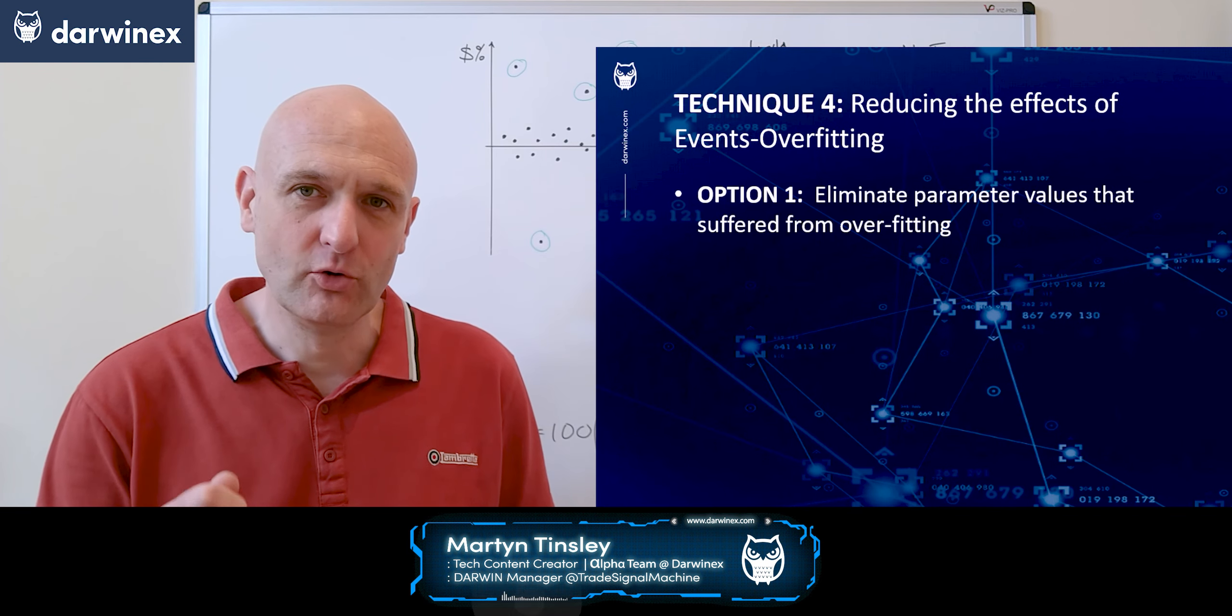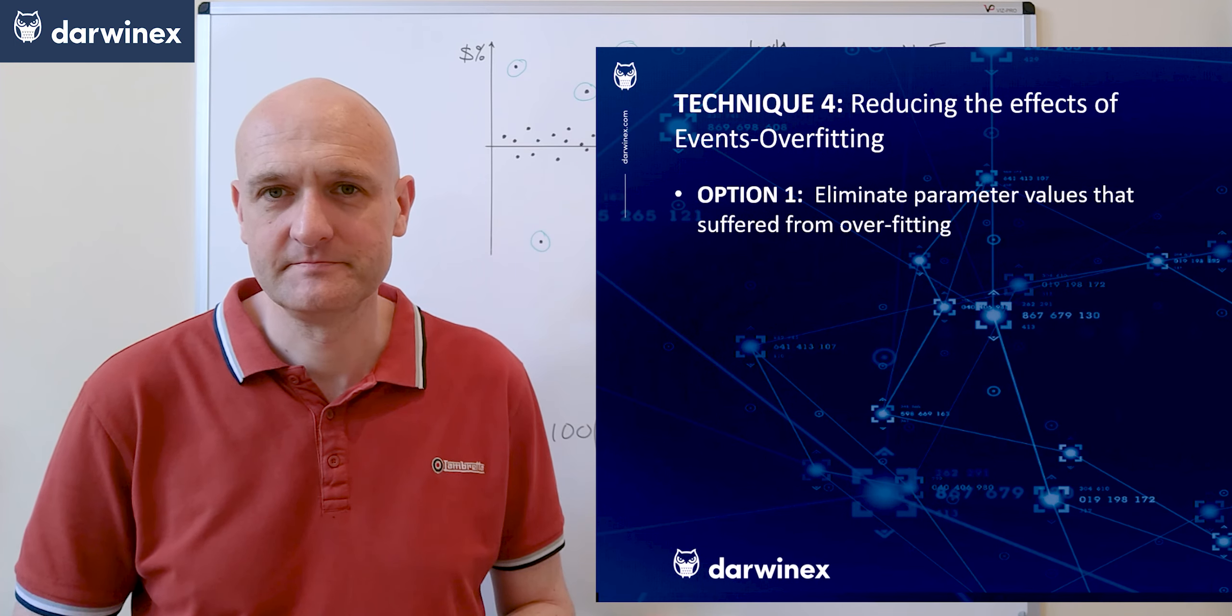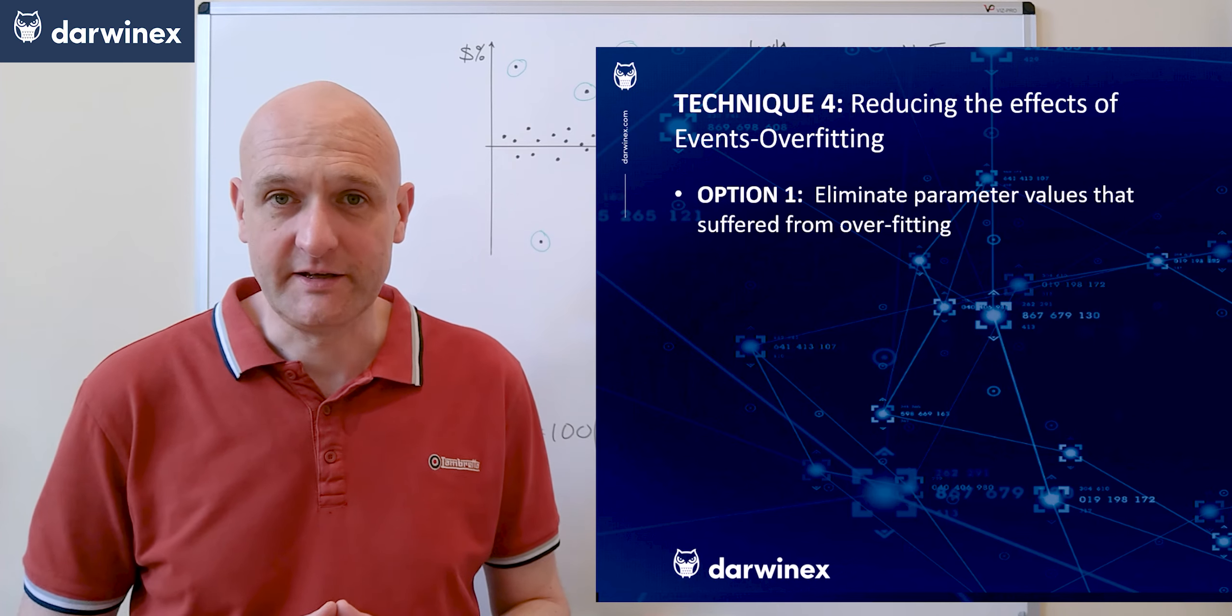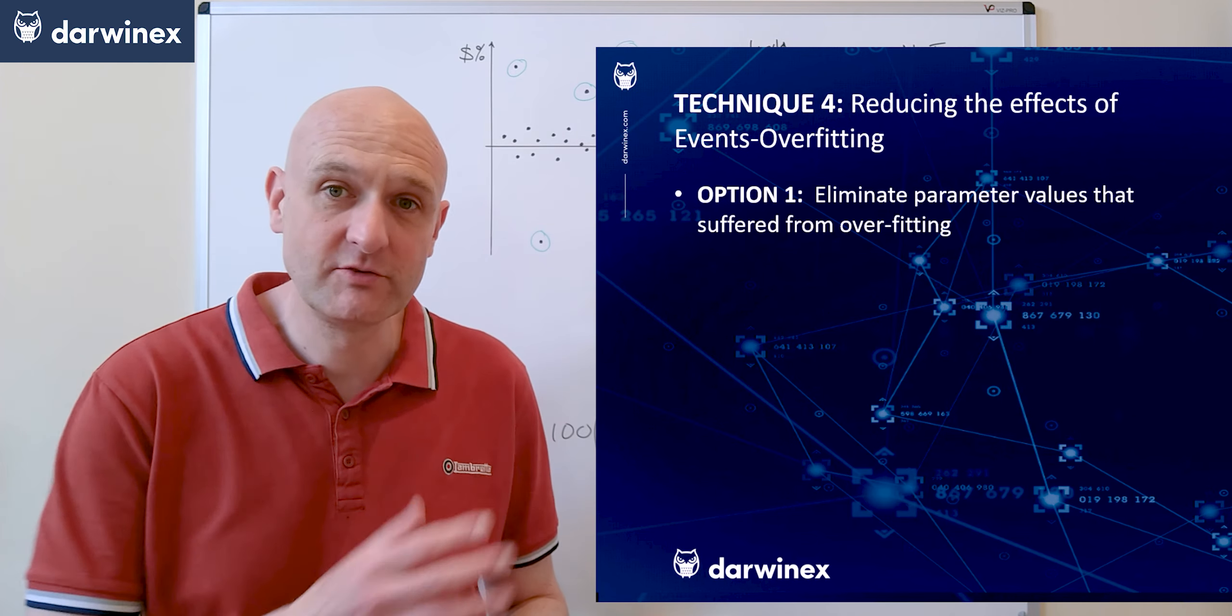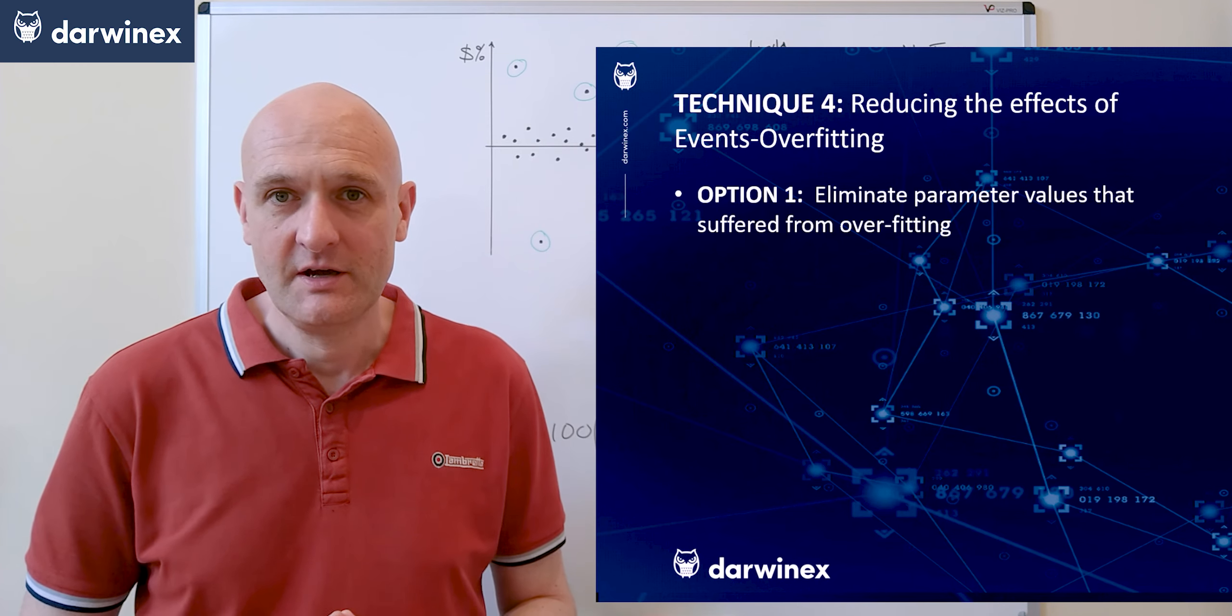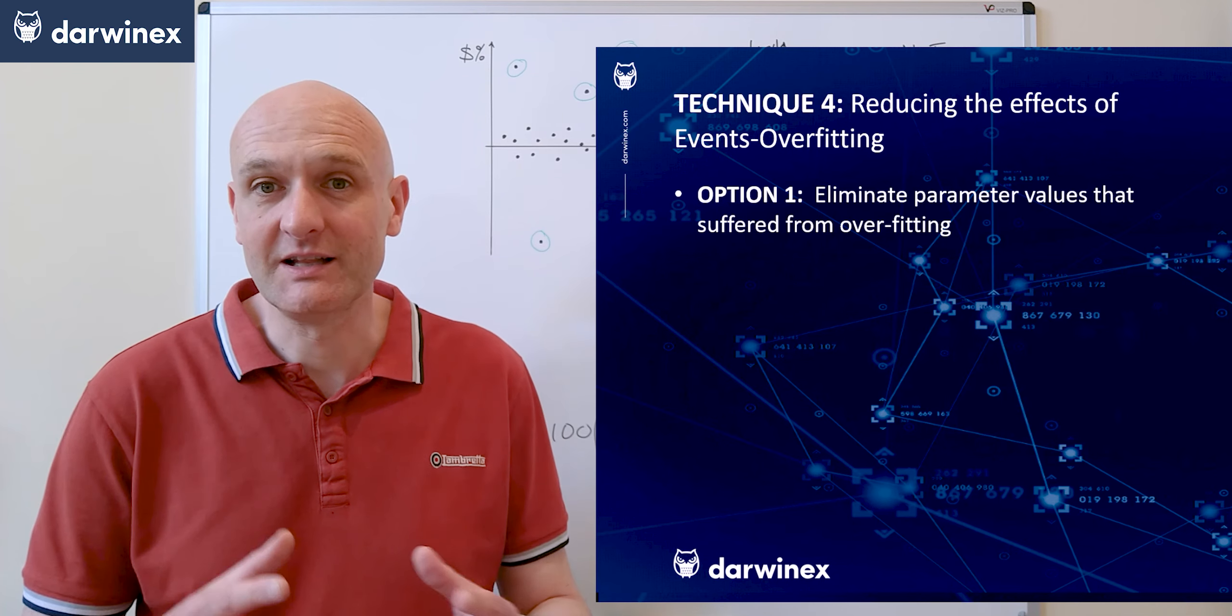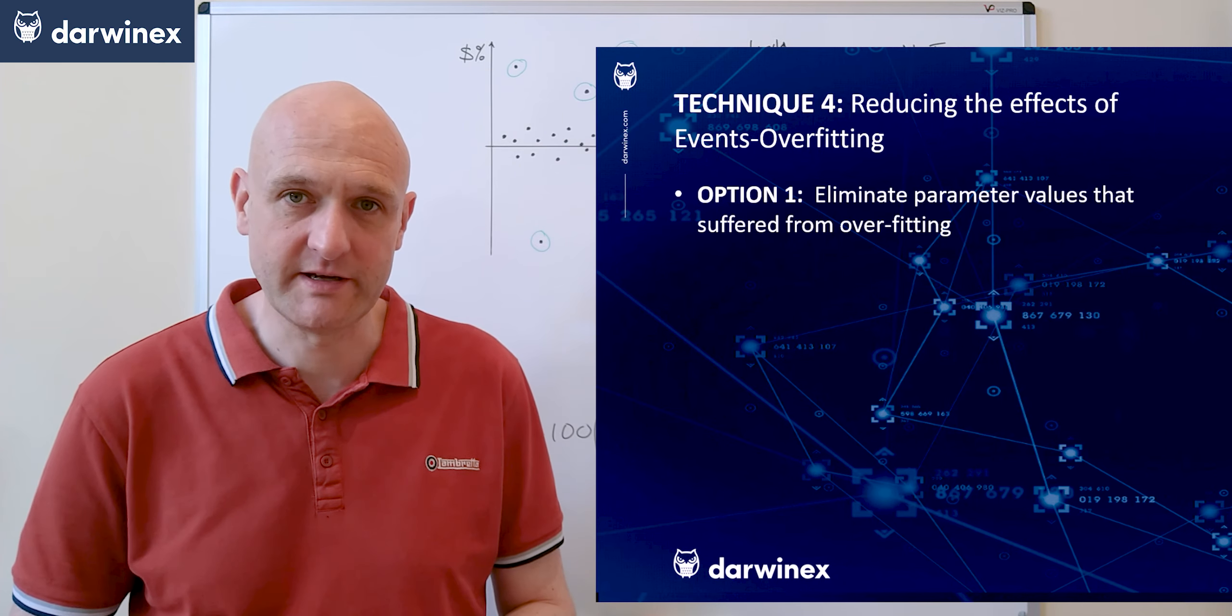Option 1 eliminates all parameter values that suffered from overfitting. So in order to do this practically you'd need to calculate the overfitting score using the method we've just gone through for each set of parameter values. Now if you have a few hundred parameter combinations then clearly you can't do this manually and you'll need to use code to automate it.